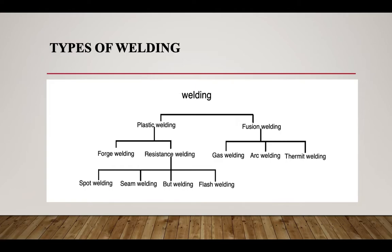This is the broad classification of welding. Welding is classified into plastic welding and fusion welding. Plastic welding is classified into forge welding and resistance welding. Resistance welding is further classified into spot welding, seam welding, butt welding, and flash welding. Fusion welding is classified into gas welding, arc welding, and thermite welding.